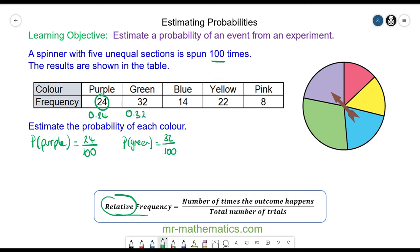We could also say 32%. The probability of a blue: again we have 14 trials out of 100 in total, and 0.14.